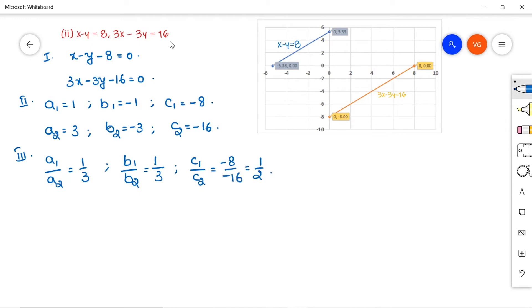So if we observe, these two are equal, that is a1 by a2 is equal to b1 by b2, but not equal to c1 by c2. Then such condition we call it as parallel lines or no solution or inconsistent pair of linear equations.